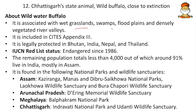Wild water buffaloes are associated with wet grasslands, swamps, flood plains and densely vegetated river valleys. They are included in CITES Appendix 3 and legally protected in Bhutan, India, Nepal and Thailand. IUCN Red List status: Endangered. The remaining population totals less than 4,000, of which 90% live in India, mostly in Assam. They are found in Kaziranga, Manas, Dibru-Saikhowa and others in Assam; Daring Memorial Wildlife Sanctuary in Arunachal Pradesh; Balpakram in Meghalaya; and Indravati National Park in Chhattisgarh.